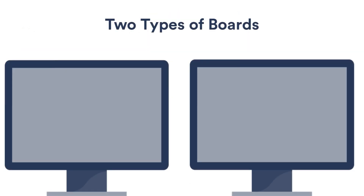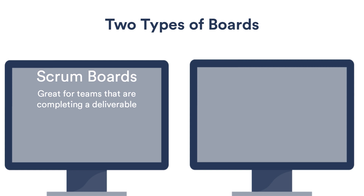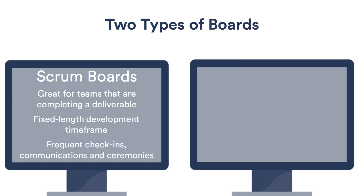There are two types of boards in Jira software. The first type is a scrum board. Scrum boards are an excellent way for a software development team to get started, but it's not just for software teams. Scrum excels as a methodology for any team that has a deliverable to ship. The fixed length development timeframe, frequent check-ins, team communication, and ceremonies like the end of sprint retrospective all contribute to stakeholders knowing how the project's going and to the team continually improving their development process.